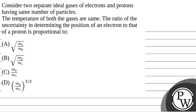Hello. Let's set the question. The question says that consider two separate ideal gases of electrons and protons having the same number of particles. The temperature of both the gases are the same. The ratio of the uncertainty in determining the position of an electron to that of a proton is proportional to?